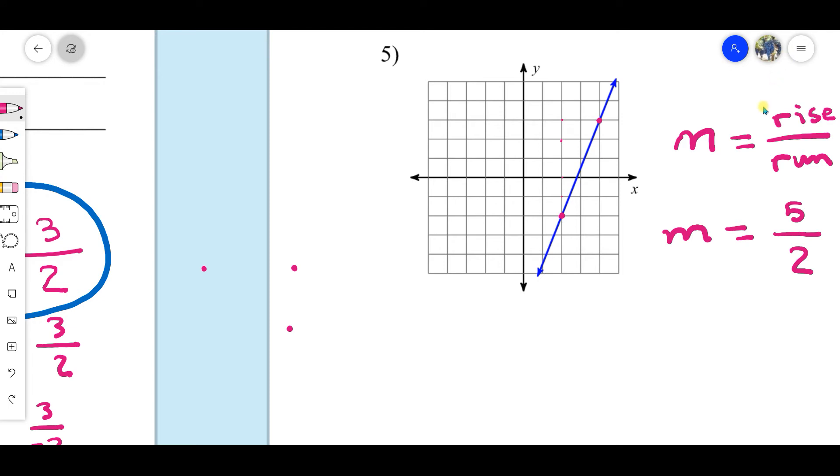These slopes must always be in lowest terms. But improper fraction is fine. You can have improper fraction here. You should not change it to a mixed number. Improper fraction is just fine. Where you can see clearly rise over run.